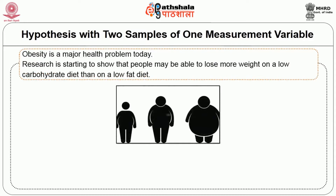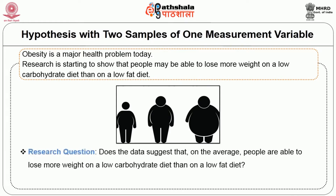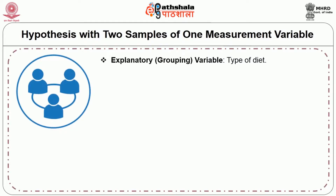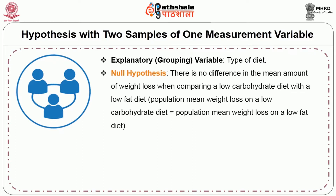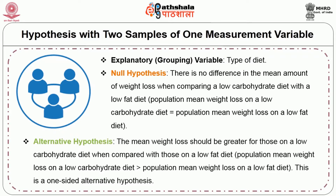Example 2: Hypothesis with two samples of one measurement variable. Obesity is a major health problem today. Research is starting to show that people may be able to lose more weight on a low carbohydrate diet than on a low fat diet. The research question is: does the data suggest that, on the average, people are able to lose more weight on a low carbohydrate diet than on a low fat diet? The response variable is weight loss; the explanatory variable is type of diet. Null hypothesis: there is no difference in the mean amount of weight loss when comparing a low carbohydrate diet with a low fat diet. Alternative hypothesis: the mean weight loss should be greater for those on a low carbohydrate diet compared with those on a low fat diet. This is a one-sided alternative hypothesis.